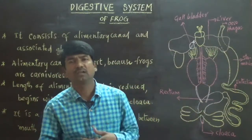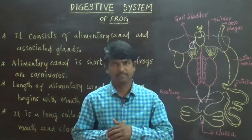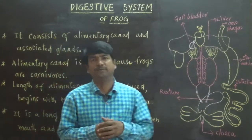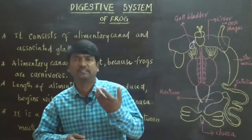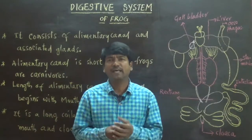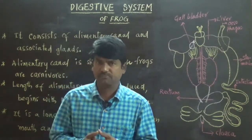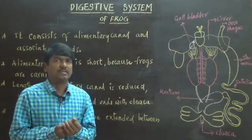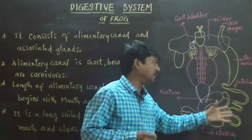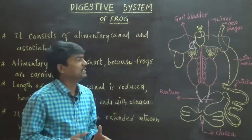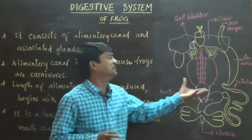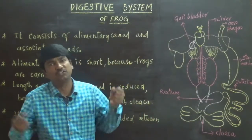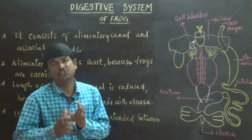The digestive system of frogs is composed of the alimentary canal and associated glands. The alimentary canal is a long tube-like structure, which is reduced in carnivorous animals. Amphibians like frogs are also considered carnivorous animals, so their alimentary canal is reduced into a shorter tube-like structure compared to herbivores.